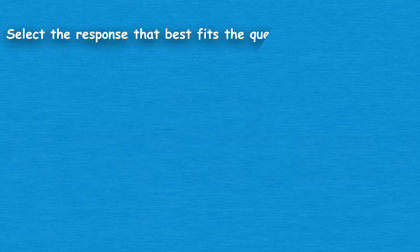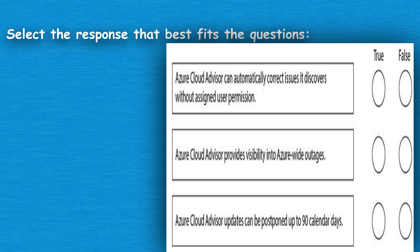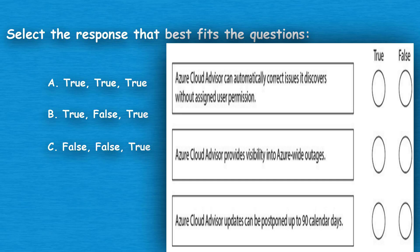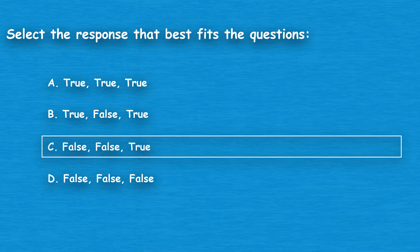The next question: select the response that best fits the questions. Option A: True, True, True. Option B: True, False, True. Option C: False, False, True. Option D: False, False, False. The correct answer is Option C: False, False, True.